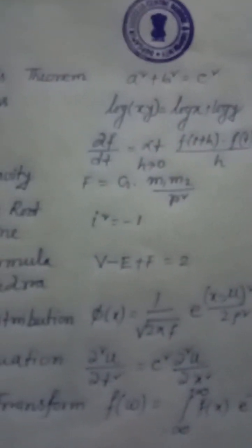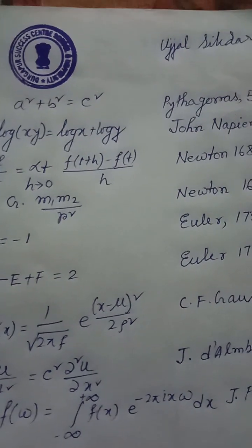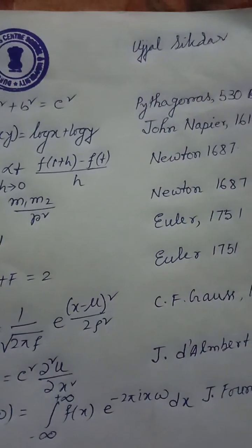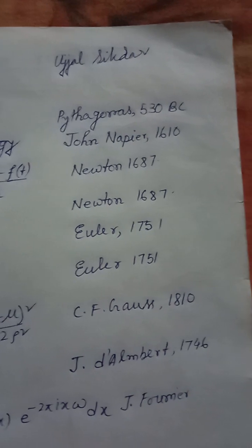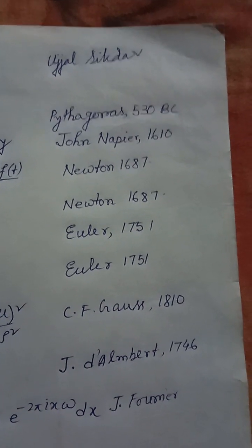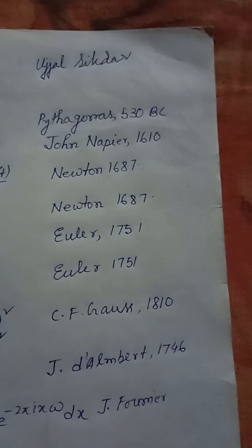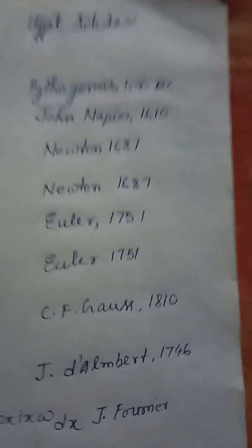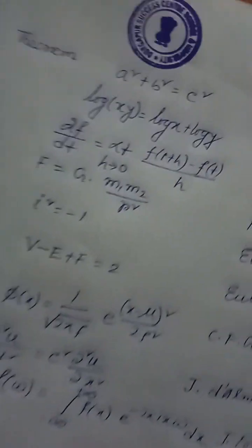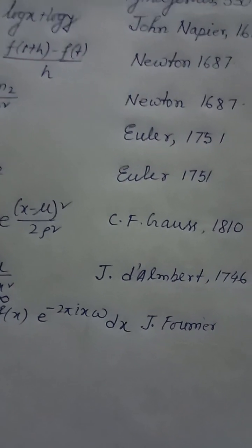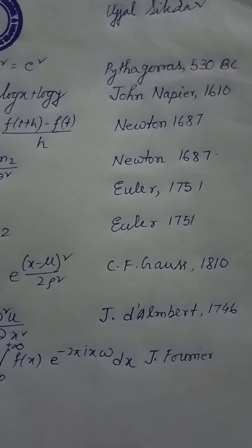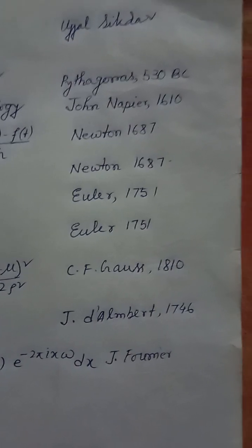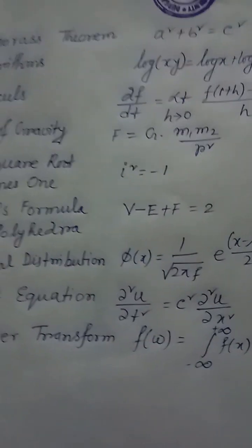Equation 7 — Normal distribution: φ(x) = (1 / √(2σ²π)) · e^(−(x−μ)² / 2σ²). Jones, Kerr, Ferry, Beach, Gauss, 1810. Equation 8 — Wave equation: ∂²U/∂t² = C² · ∂²U/∂x².